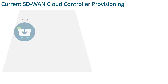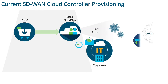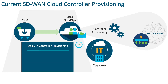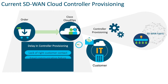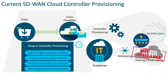Currently, the customer places an order for the cloud subscriptions, then Cisco CloudOps provisions the controllers, and then the customer defines the IP whitelist via email. However, due to a number of possible errors, the provisioning process may be slowed down or even halted. And once provisioned, complying with operational procedures may be limited due to lack of hosted infrastructure monitoring.